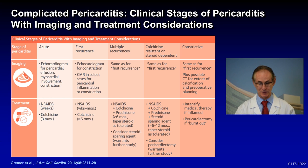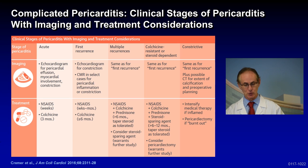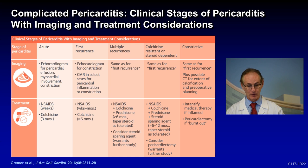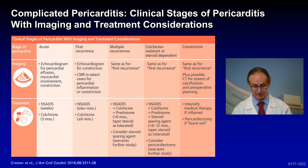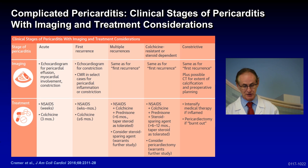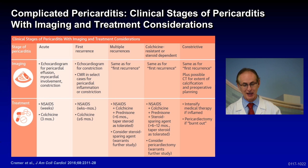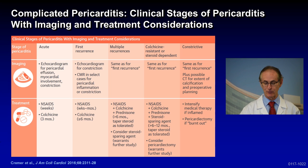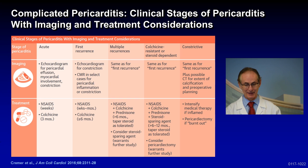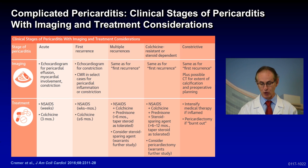With multiple recurrences, imaging is similar to the first recurrence, and now you're adding different treatments. You give NSAIDs plus colchicine, and now you even add prednisone for over six months with a very slow taper. At this point, for multiple recurrences, you may need steroid-sparing agents. In the colchicine-resistant or steroid-dependent stage, you may add NSAIDs plus colchicine plus prednisone plus steroid-sparing agents, and may even consider pericardiectomy — removal of the sac.